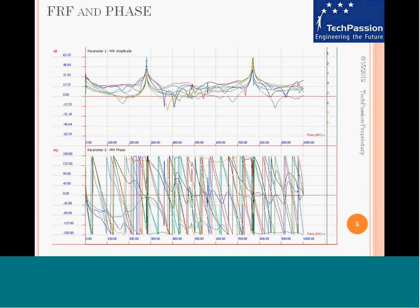This shows the frequency response function amplitude and phase. The amplitude plot has the y-axis in decibels and the x-axis in frequency. For the phase plot, the y-axis is in degrees and the x-axis is frequency.